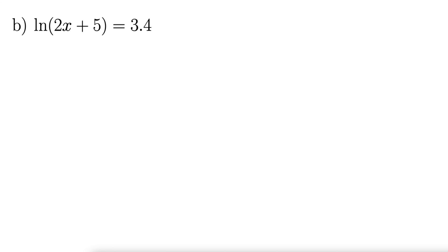Here we have natural log of quantity 2x plus 5 equals 3.4. And we'll use the same approach. This natural log, ln, is actually log base e of 2x plus 5. And that equals 3.4 still.